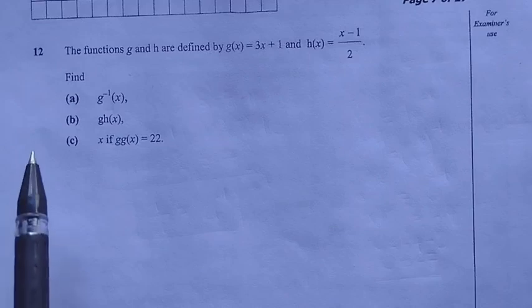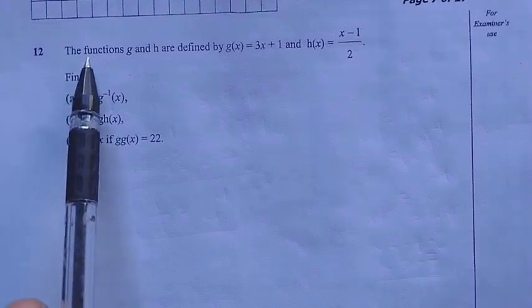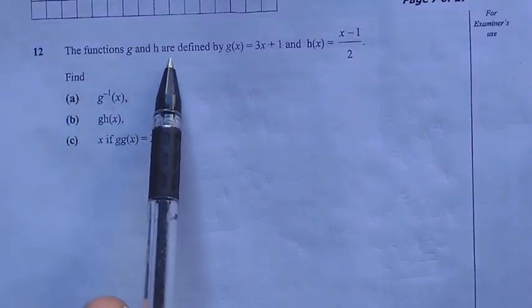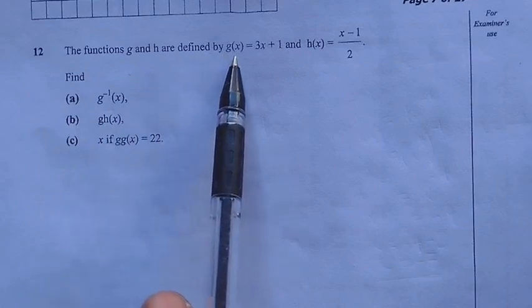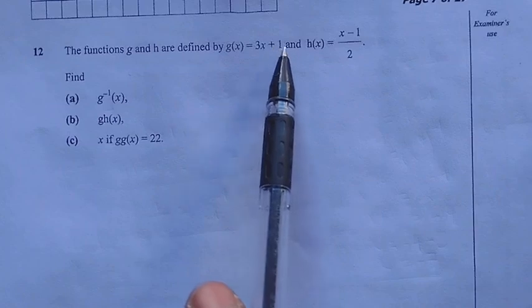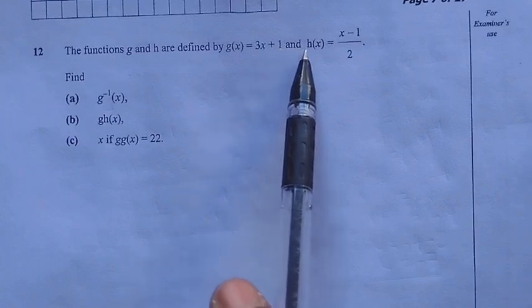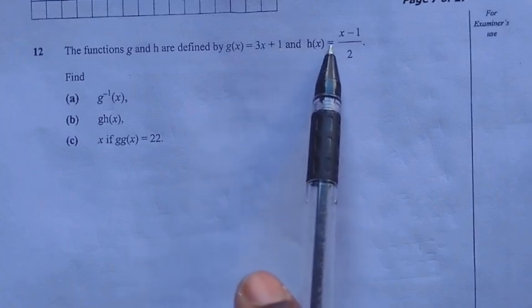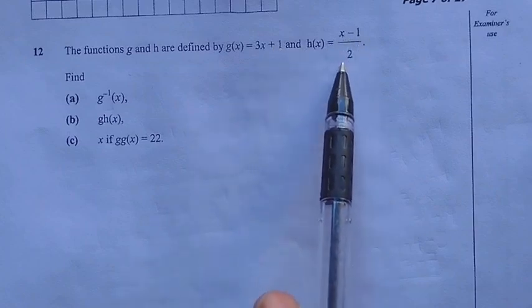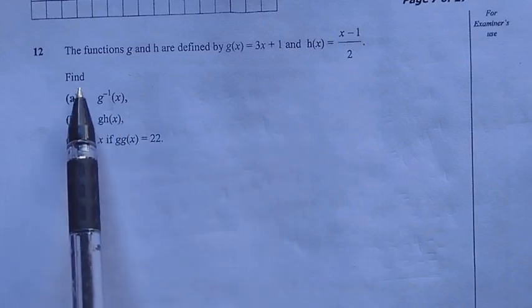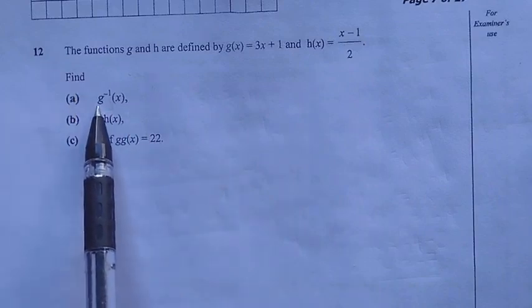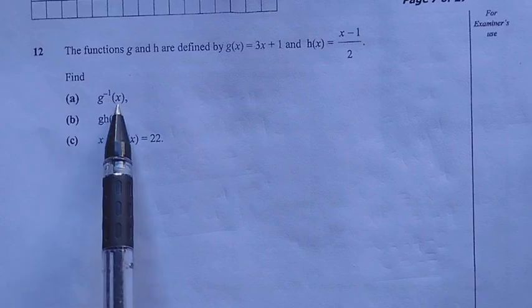So the question reads: the functions g and h are defined by g(x) = 3x + 1, and h(x) = (x - 1) / 2. Find (a) g inverse of x.